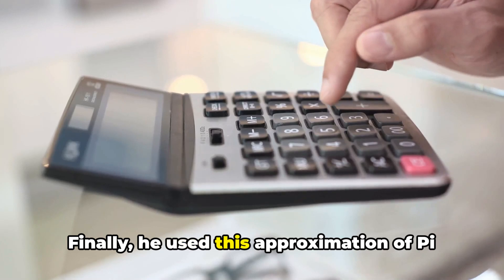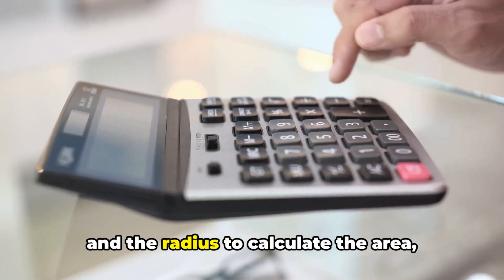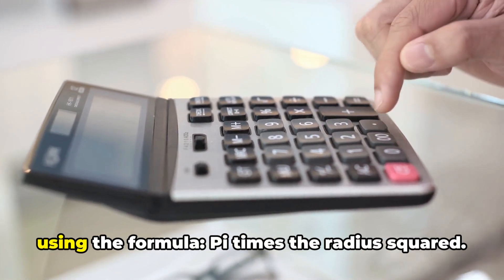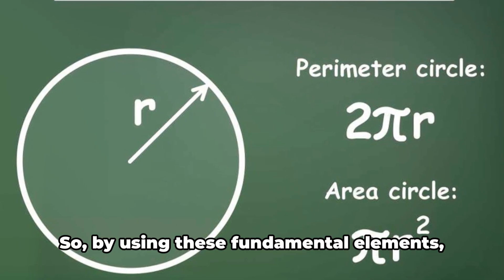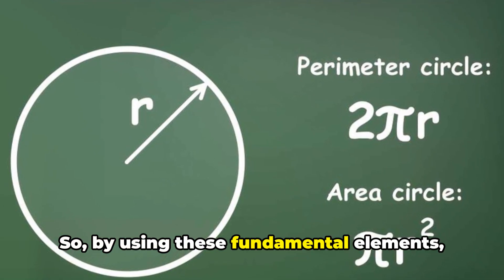Finally, he used this approximation of pi and the radius to calculate the area using the formula, pi times the radius squared. So, by using these fundamental elements,